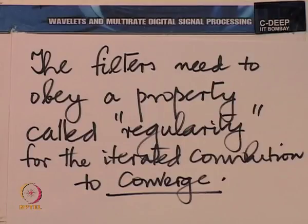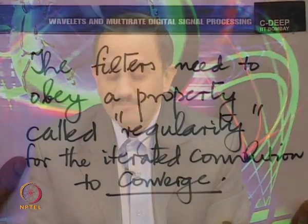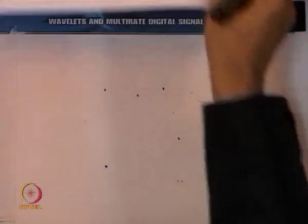Converge to what? Well, converge to a function which is either continuous or at least continuous almost everywhere except for an isolated finite number of points. You know, the Haar scaling function is not continuous, but it is only two points at which it is discontinuous. We do not want the iteration taking us to an object which has infinite points of discontinuity. This regularity in this case comes from the presence of zeros.